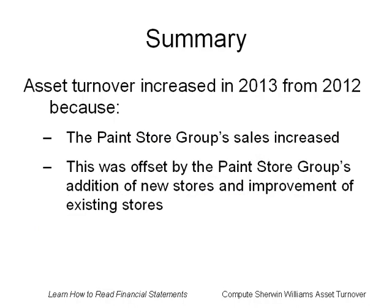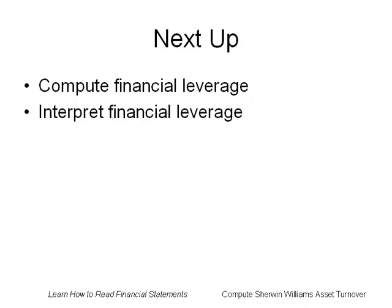In summary, the asset turnover increased in 2013 from 2012 because the paint stores group's sales increased more than the group's assets increased, due to opening new stores and improving existing stores. We've looked at the asset turnover and explained the increase for Sherwin-Williams. Next, we'll examine the financial leverage ratio for the company.